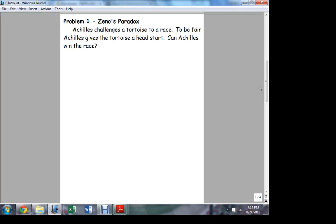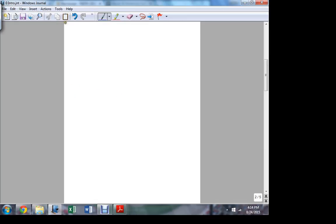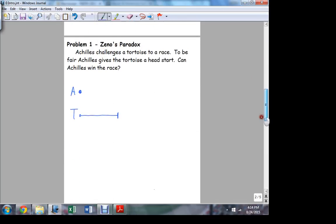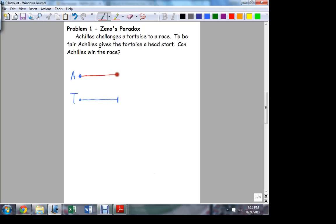Here's Achilles. He's going to start here. Here's the tortoise. He gets a head start. So maybe the tortoise is going to start here. In order for Achilles to catch up with the tortoise, he has to get at least as far as the tortoise had a head start. Before Achilles can actually catch up with the tortoise, he actually has to get as far as the tortoise started. So Achilles has to get at least this far. And I don't know how much time that will take him. Let's call that time one. So it takes Achilles T1 seconds or minutes to get to the point where the tortoise started.